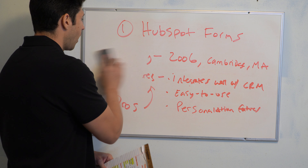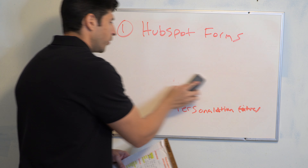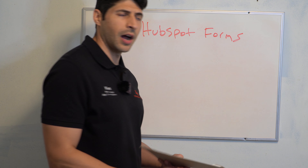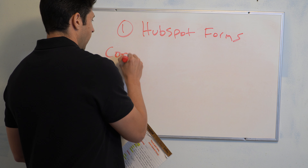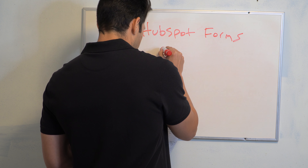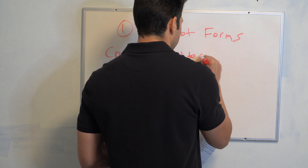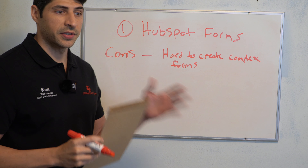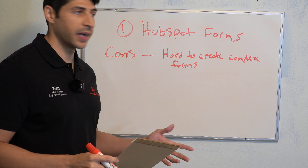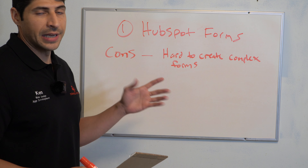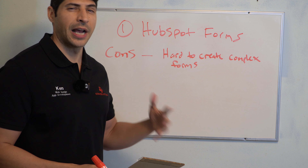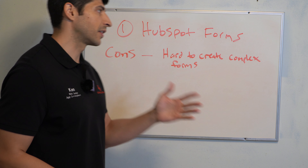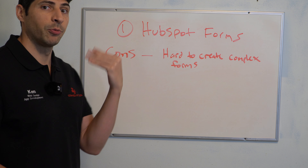The cons are where you truly see if their product is worth using or not, because every company can boast that they're the best, but the cons really tell you what they can and cannot do. The first con is that it is hard to create complex forms. If your form requires a lot of steps or in-depth answers, it's not that great. We use them for our company, but our questions are simple and straightforward — that's why HubSpot forms work best for us.